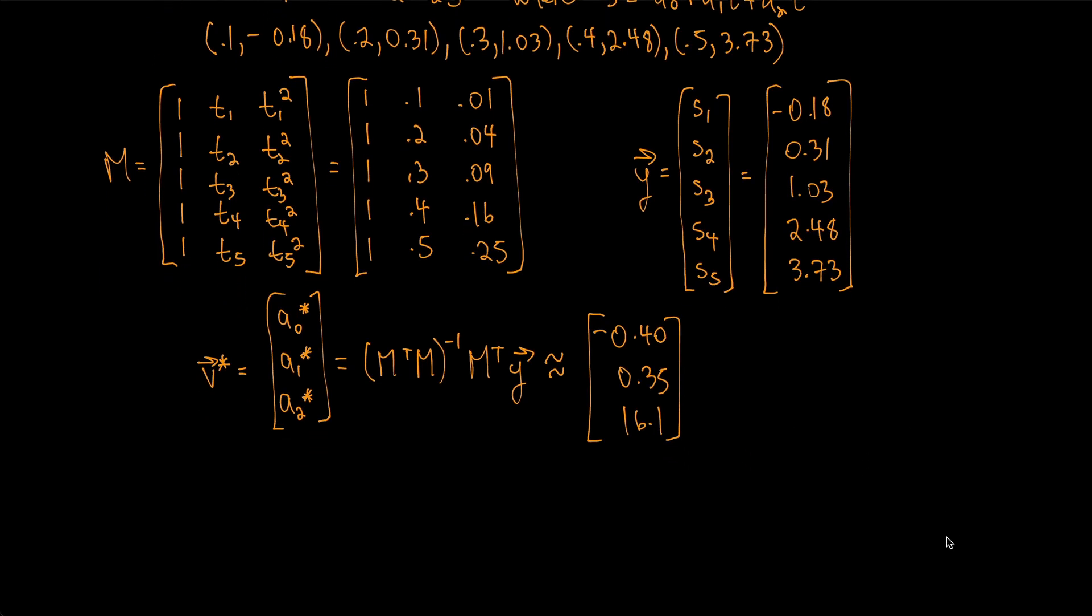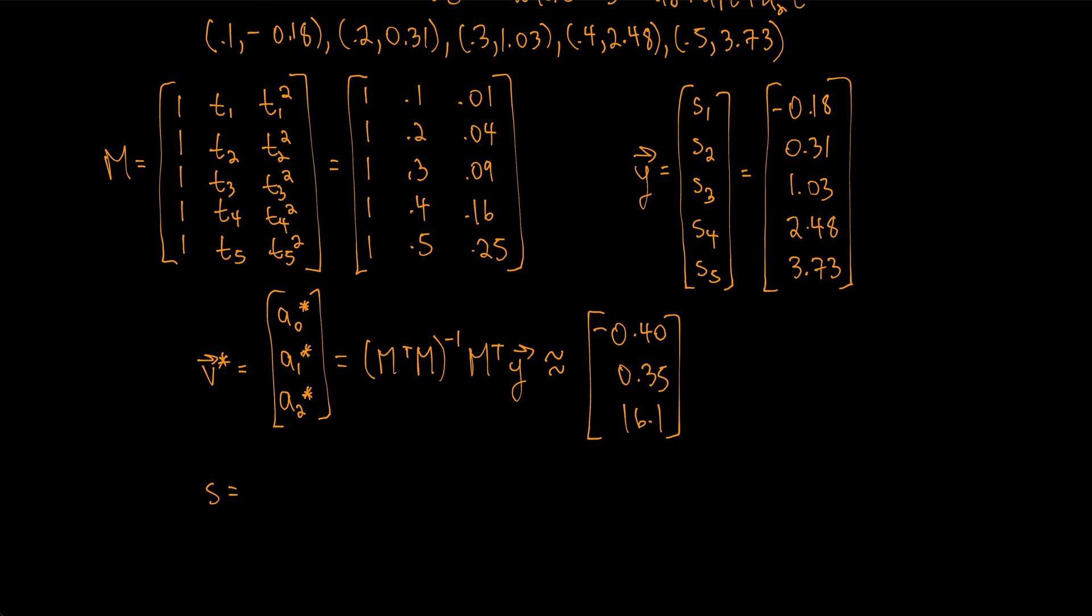So that means that we have S = -0.40 + 0.35*t + 16.1*t^2. So that means that (1/2)g has to equal 16.1, because that's the coefficient for t squared. Okay, so then solving for g, just multiply by 2, we get that g is equal to 32.2 feet per second squared.